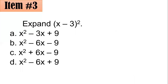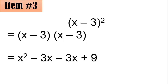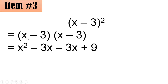Number 3: expand (x minus 3) quantity squared. Which of A, B, C, or D is the correct answer? When you square a number, you are multiplying it by itself. So (x minus 3) squared equals (x minus 3) times (x minus 3). You could use the FOIL method or the shortcut for squaring a binomial. I will use the FOIL method.